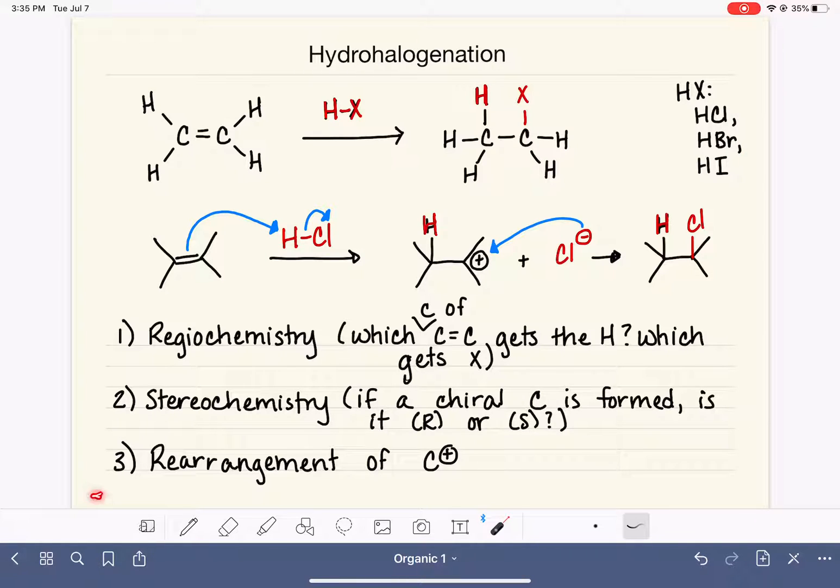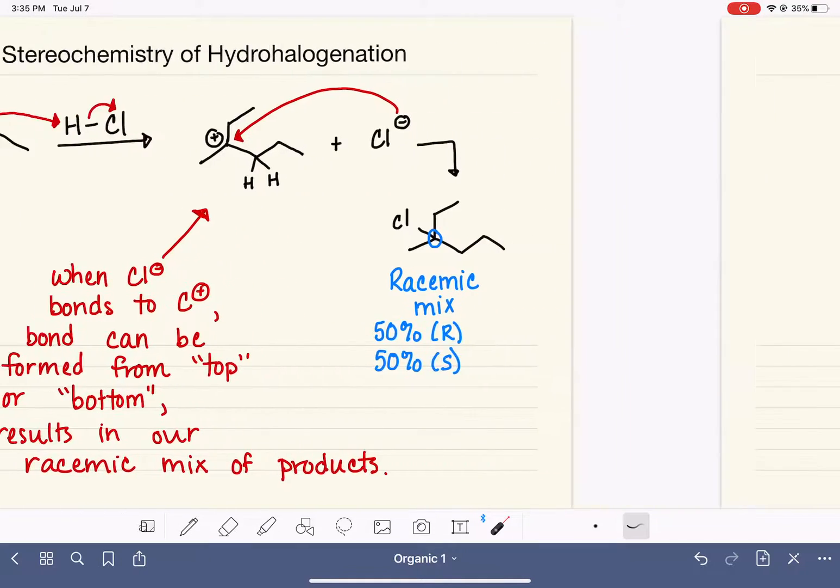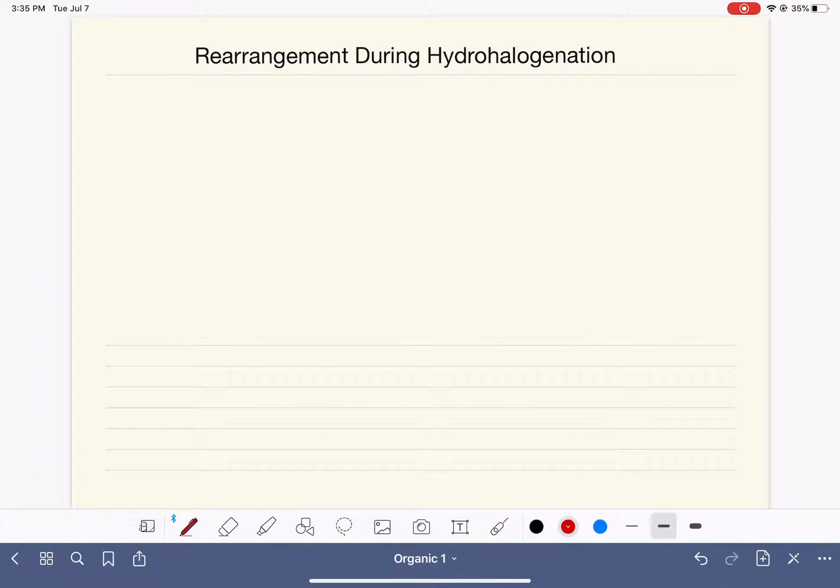And now we are ready to talk about the third variable that we need to keep in mind during the hydrohalogenation reaction, which is the potential for rearrangement of the carbocation intermediate that is formed in the reaction. We are going to look at an example of an alkene addition that involves rearrangement. And this is also going to give us an opportunity to practice Markovnikov's rule as well as stereochemistry for this reaction.